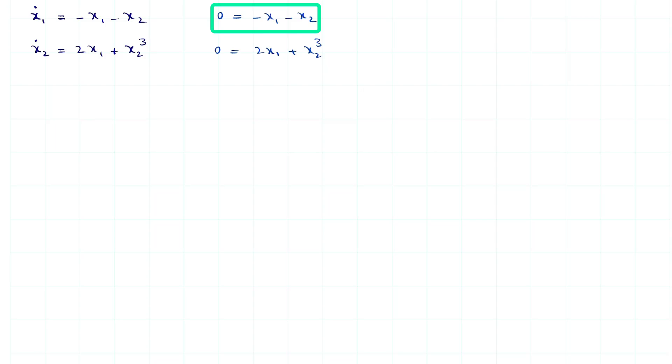So, let's just start with the first equation. We move x1 to the left-hand side and then obtain that x1 equals minus x2. Then we go to the second equation. 2x1 equals minus x2 cubed.